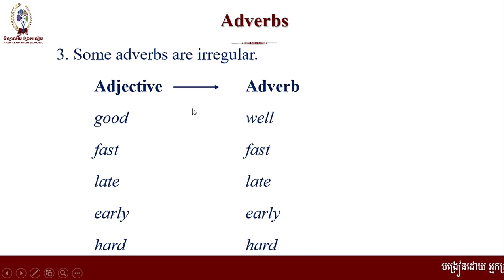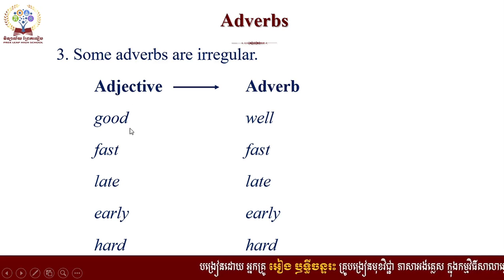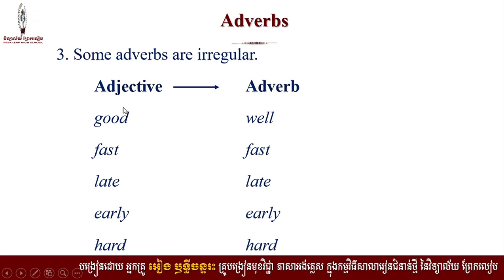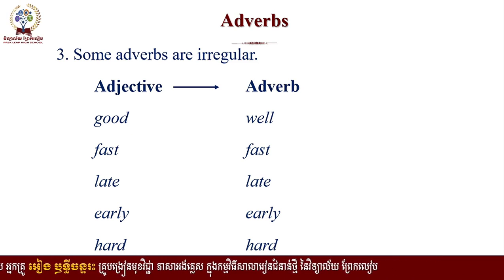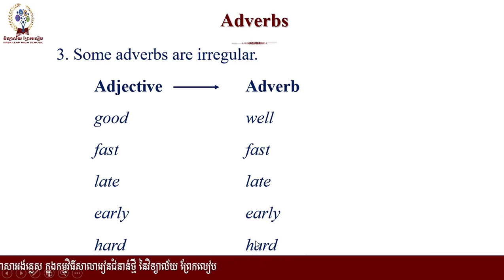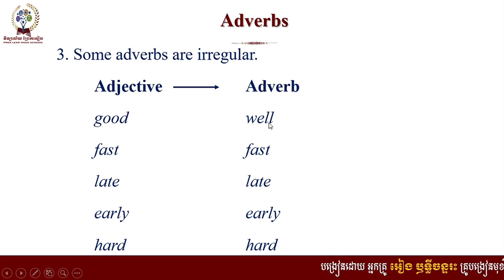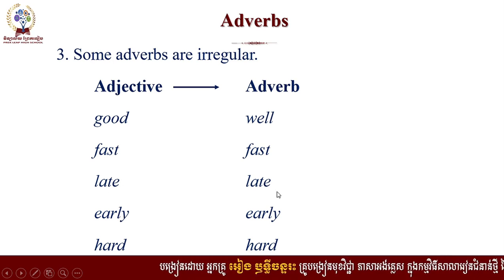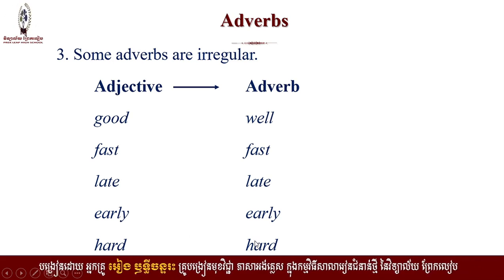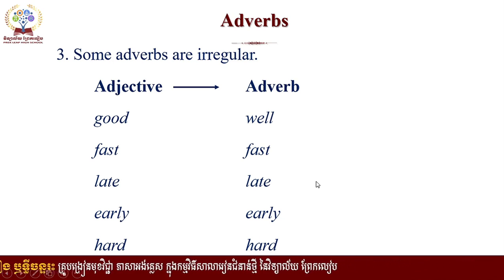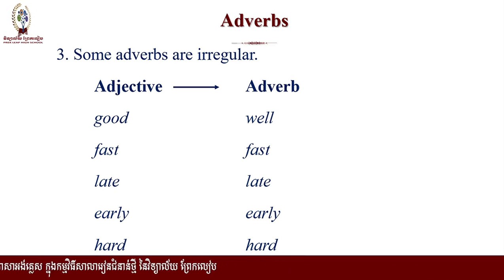And another type is irregular adverbs. For irregular adverbs, the form changes differently. For example: good is an adjective; when we change it to an adverb, it becomes 'well.' Fast stays fast. Late stays late. Early stays early. Hard stays hard. What you have to do is remember and memorize how these change and how adverbs are used.